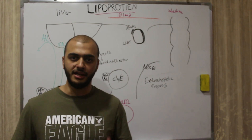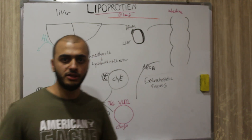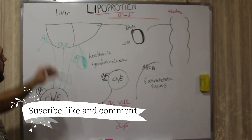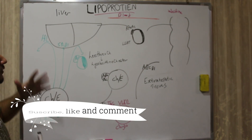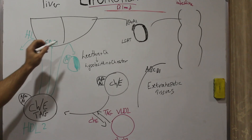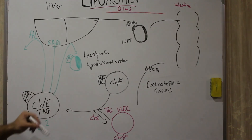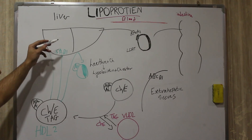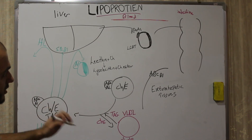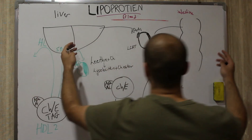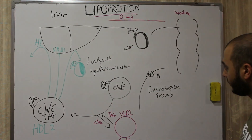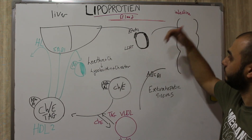Welcome to our channel, Anything Medicine. Continuing with HDL lipoprotein: the source of HDL lipoprotein, unlike chylomicron and VLDL, is both the liver and intestine. It will be secreted by these two organs — intestine and liver.